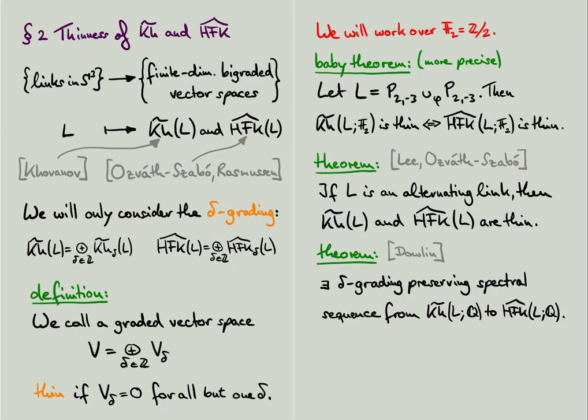However, Dowlin constructed his spectral sequence over the field of rational numbers. We proved this baby theorem over Z-mod-2 coefficients, so we cannot use his spectral sequence. The reason why I call our theorem a baby theorem is because it holds in much greater generality. Namely, you can ask what happens when we replace the 2-3 pretzel tangle by a different tangle, or more generally what happens when we combine two different Conway tangles. The answer is that very often the theorem still holds. My goal for this talk is to provide some context for the ideas that go into the proof of this result.